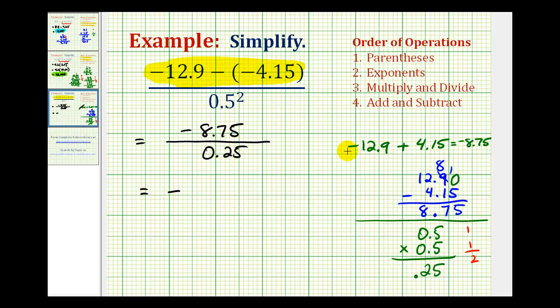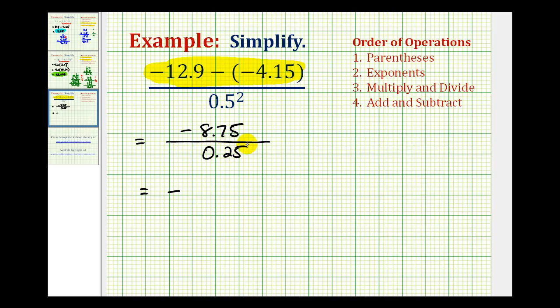So let's go ahead and erase this over here. We'll set this up as long division. So we'll have 8.75 divided by 0.25. When performing long division, we want our divisor to be a whole number. So we need to move the decimal point to the right two places. And we can do this as long as we do the same to the dividend.